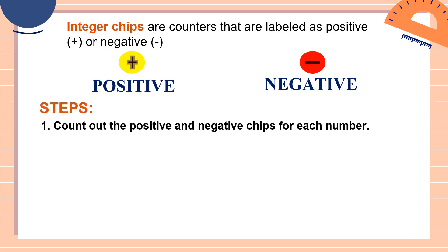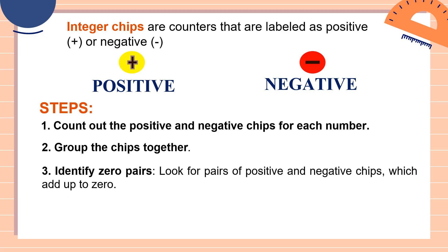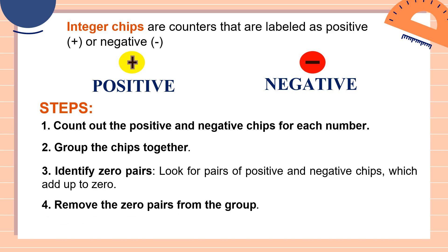Step one: count out the positive and negative chips for each number. Step two: group the chips together. Step three: identify zero pairs — look for pairs of positive and negative chips which add up to zero. Step four: remove the zero pairs from the group.